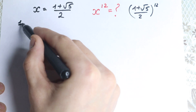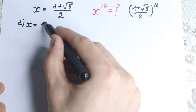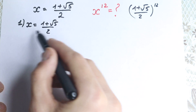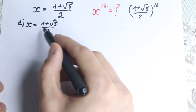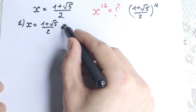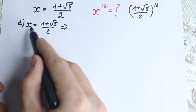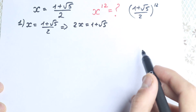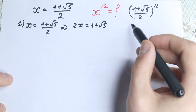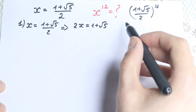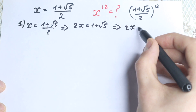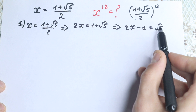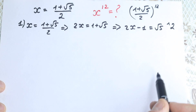First of all, we have x equal to 1 plus square root of 5 over 2. Let's find x in another way. Let's multiply both sides by 2, so we have 2x equal to 1 plus square root of 5. Then let's bring 1 from the right to the left, so we have 2x minus 1 equal to square root of 5. We have a square root on the right-hand side and we don't need it, so we raise both sides to the second power.